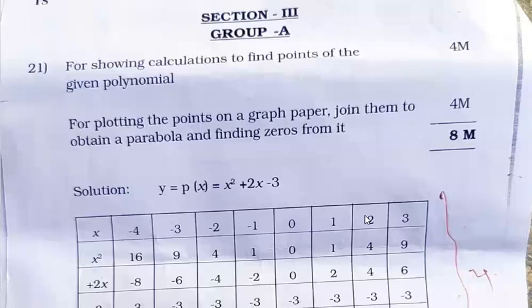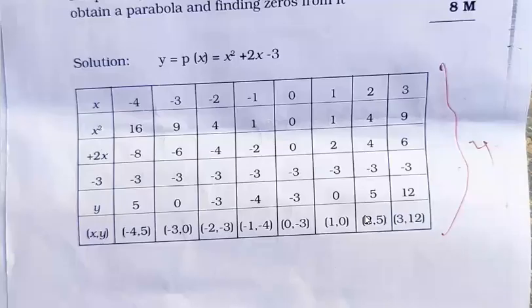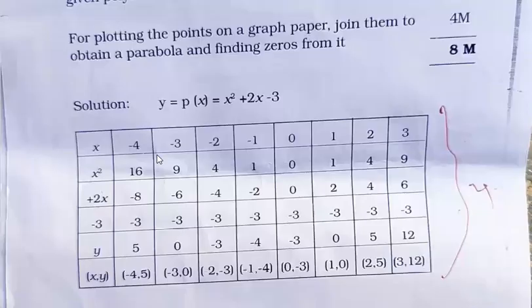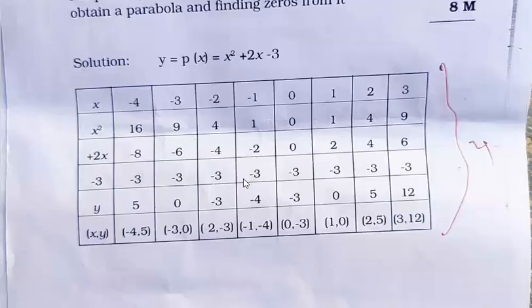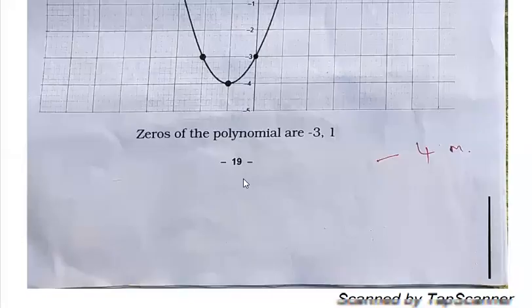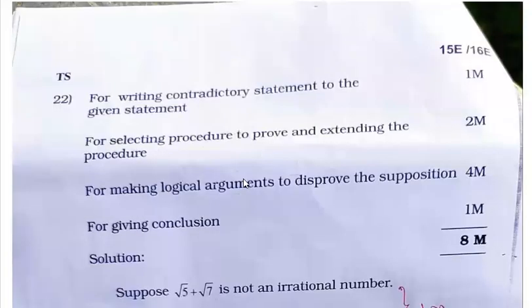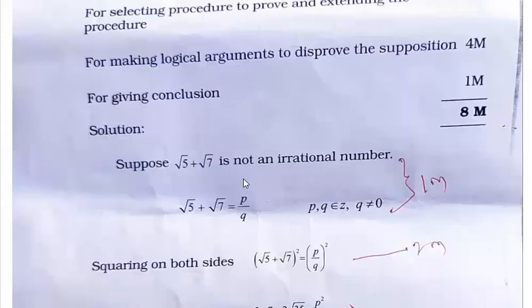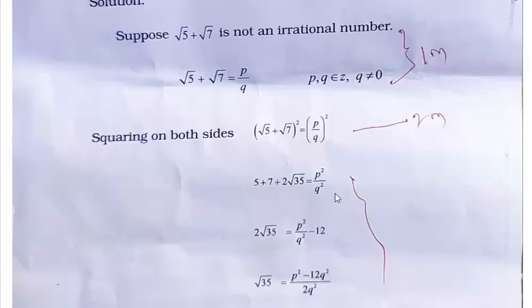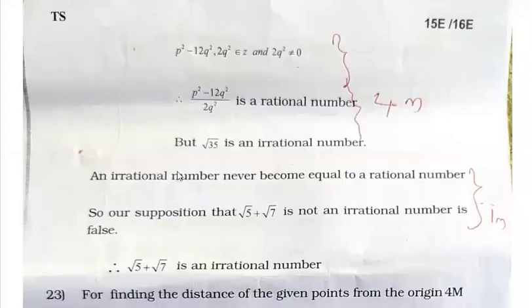This is from the Polynomial chapter — a very easy question. For showing the calculation to find the points of the given polynomial you get four marks, and plotting the graph is four marks. For the graph you will get four marks. For writing in p/q form you get one mark, for the next step two marks, for the remaining last step four marks, and for writing the contradictory conclusion you get one more mark.